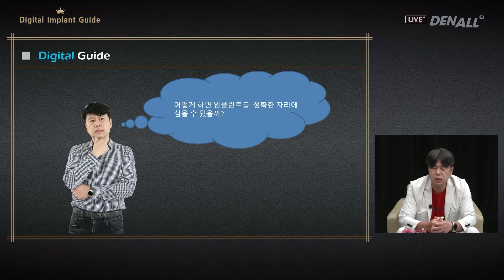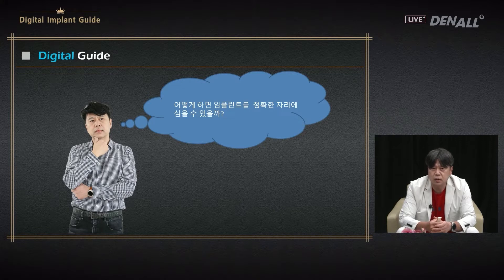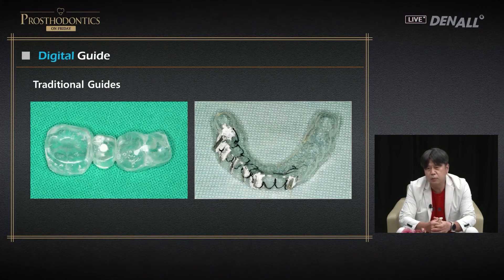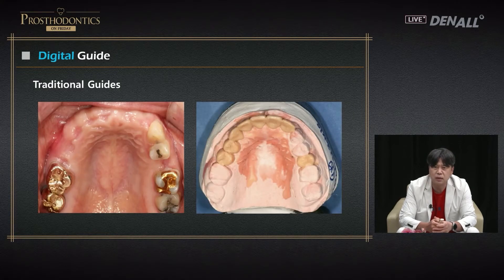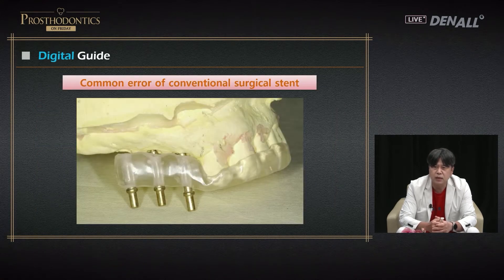The problem is: how can we place implants in accurate positions so that the prosthesis can be functional, aesthetic, and stable in the long run in the patient's mouth? We have tried for a long time to place implants in more precise positions. The conventional surgical stents have limitations — they are designed based on a model or panorama.